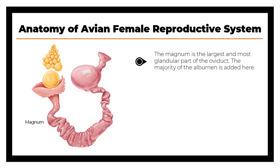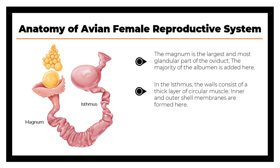The magnum is the largest and most glandular part of the oviduct, and the majority of the albumen is added here. In the isthmus, the walls consist of a thick layer of circular muscle, and the inner and outer shell membranes are formed here.